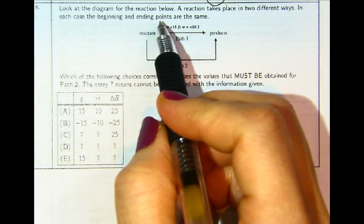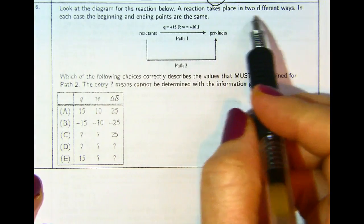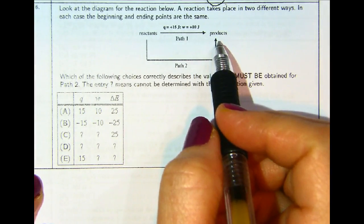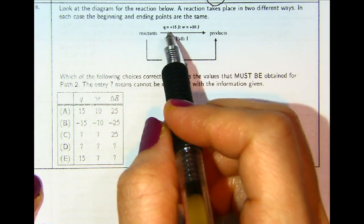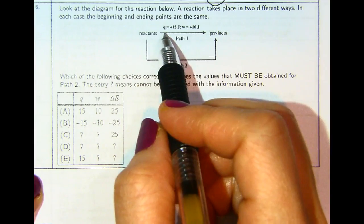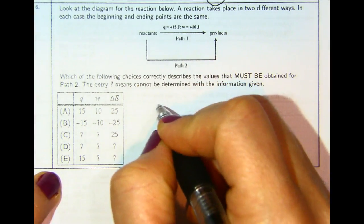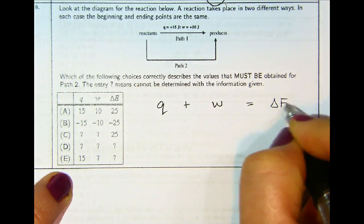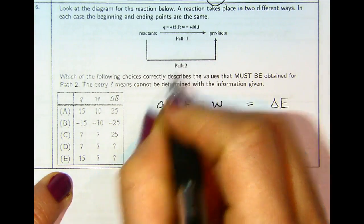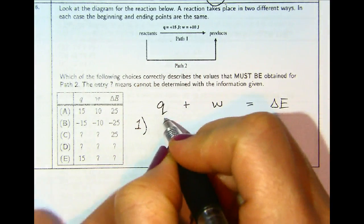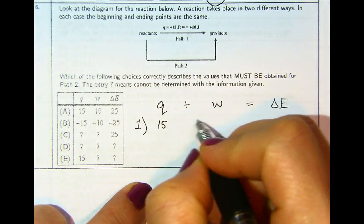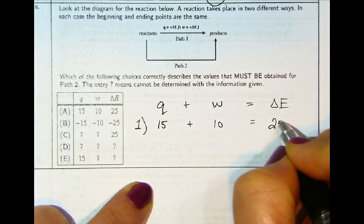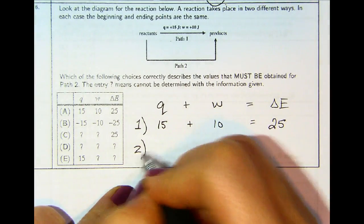Number 6. Look at the diagram for the reaction below. A reaction takes place in two different ways. In each case, the beginning and ending points are the same. For path number one, Q is plus 15 and W is plus 10. We know that Q plus W equals delta E. So for path one, Q is 15 and W is 10, giving delta E of 25.